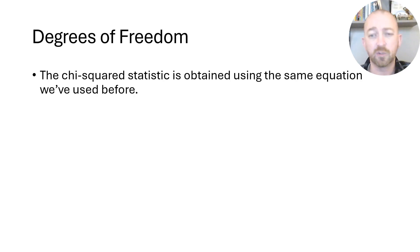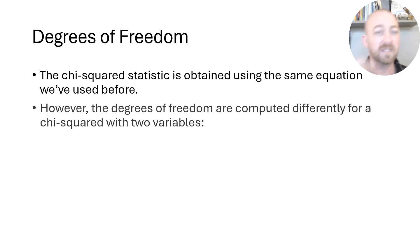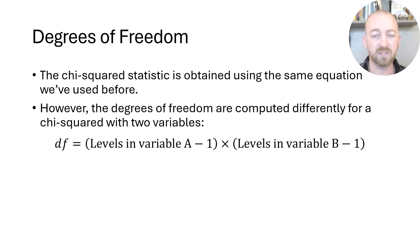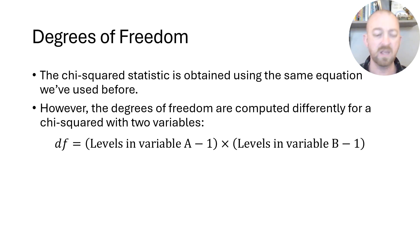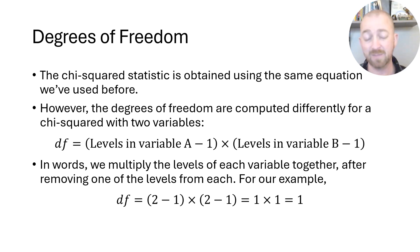The last thing to cover is how to calculate the degrees of freedom for a two-variable chi-squared. It's different from the one-variable chi-squared, where you simply took the number of cells and subtracted one. Now, because we have two variables, there are more restrictions. All we do is take the number of levels in variable one and subtract one, then do the same for variable two and subtract one, then multiply those two results together. In a two-by-two design, that's two minus one times two minus one, which is one times one, giving us one degree of freedom.